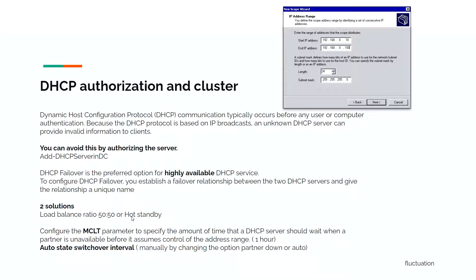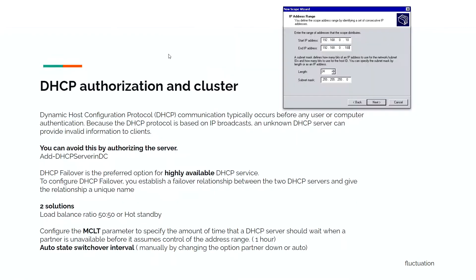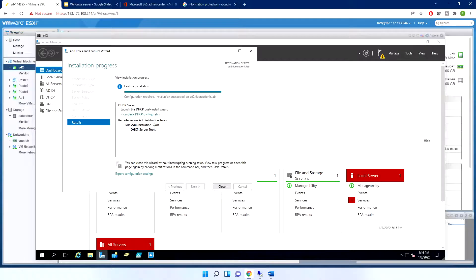You have two failover modes: Load Balance (50/50 — both servers handle requests) or Hot Standby (only the primary server is used; the secondary takes over only if the primary goes down). You can also configure the MCLT parameter to specify how long a server waits before assuming control of the address range.